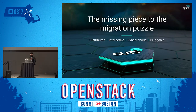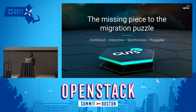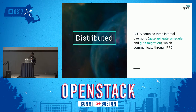GERDs is the missing piece in the migration puzzle. It is a distributed, interactive, synchronous, and pluggable product — following the same patterns as other OpenStack components. GERDs has three internal components: GERDs API, GERDs Scheduler, and GERDs Migration. All three communicate through a message queue bus and remain in sync. GERDs interacts with the source cloud's RESTful APIs to gather resource information, and with the destination cloud's RESTful APIs to create resources at the destination.